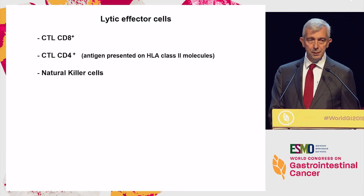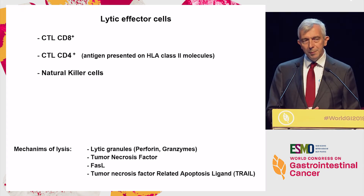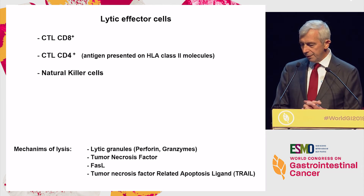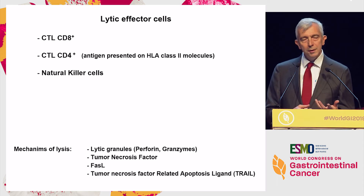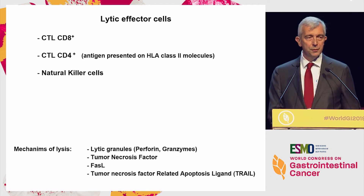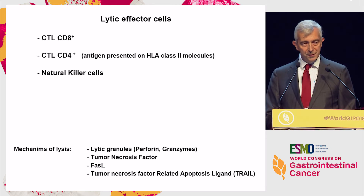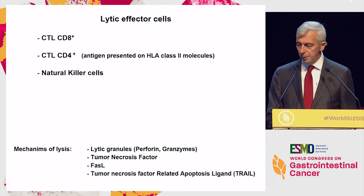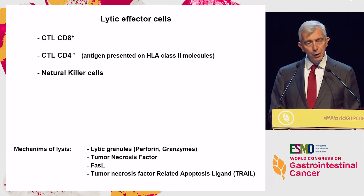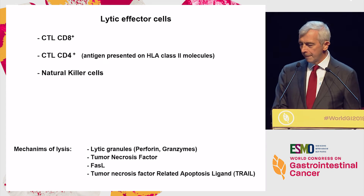Then of course the natural killer cells. The mechanisms of lysis are more diverse than usually stated to simplify things. They have lytic granules with perforin and granzymes — delivering into the target cell a cargo that induces apoptosis. But tumor necrosis factor, present on the surface, can also lead to apoptosis. Other members of the TNF and TNF receptor family can do that as well — FAS ligand is of course very well known, if you have FAS on the target cell. And TRAIL — these other molecules that can do that as well.